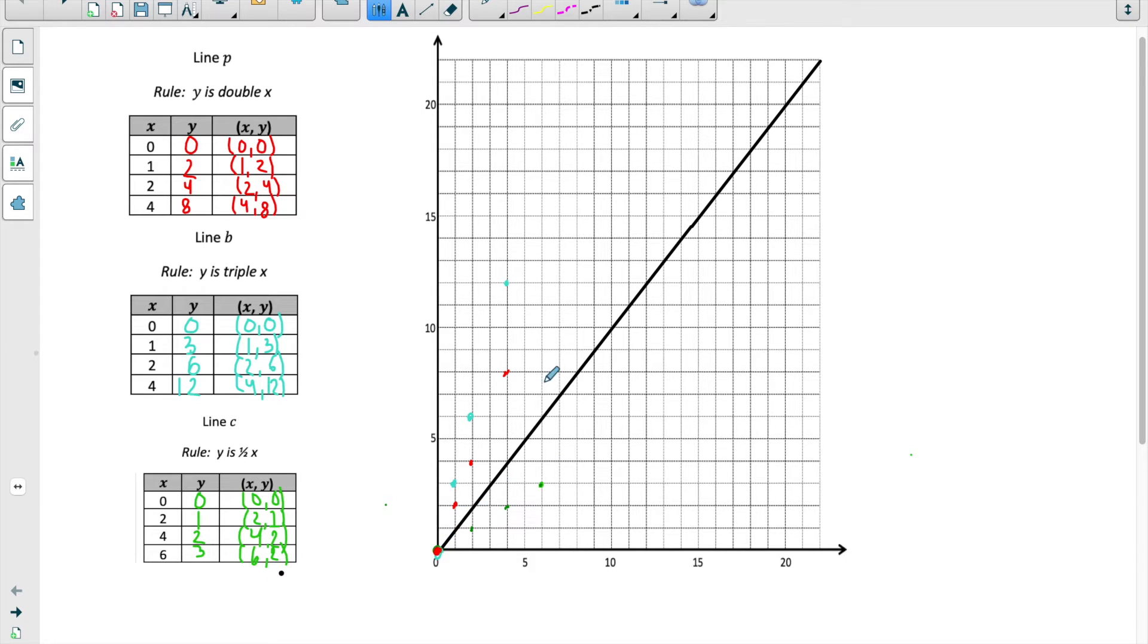The line I'm starting with on my coordinate plane is following the rule y equals x. You could also think of it as y is 1 times x. But now we're going to see what happens when I plot these other lines. We're looking at the rule y is double x, y is triple x, and y is one half x. I want you to notice what happens with the lines, especially with its steepness.